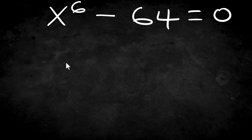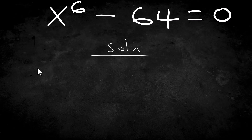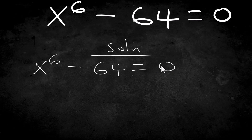Welcome to Tedious Online Math. Let's provide a solution to this question: x raised to the 6 minus 64 equals zero. Since x is raised to the 6th power, we are expected to get six solutions. Now let's get started. We are given x to the power 6 minus 64 equals zero. Because of the minus, let's try to adjust this.